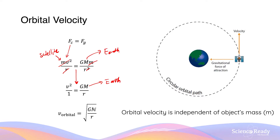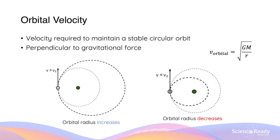The key takeaway from this expression is that the orbital velocity is independent of the object's mass. This means no matter how heavy or light the satellite is — whether it's 500 kg or 50,000 kg — the orbital velocity required to complete a circular orbital path with the same radius will be exactly the same. The orbital velocity is therefore the velocity required for any mass to maintain a stable circular orbit at a given radius, and it is perpendicular to the gravitational force, as illustrated in both diagrams.